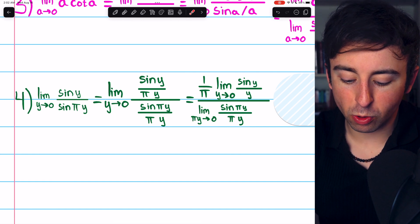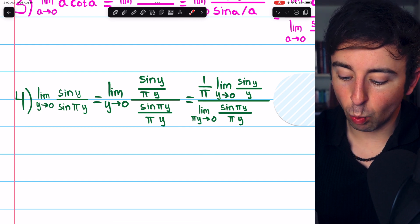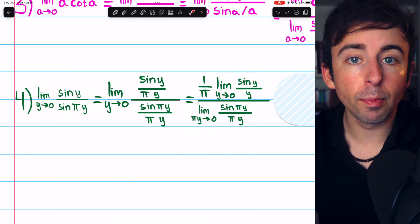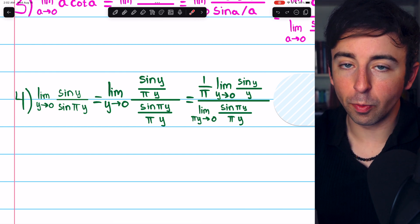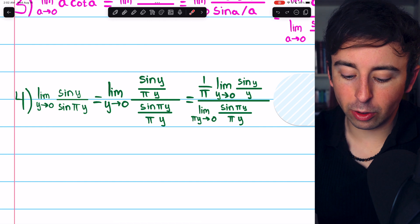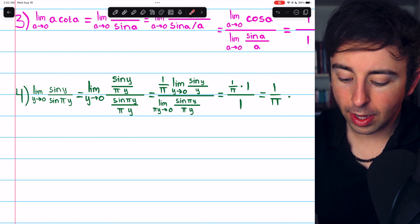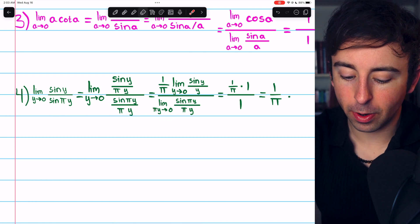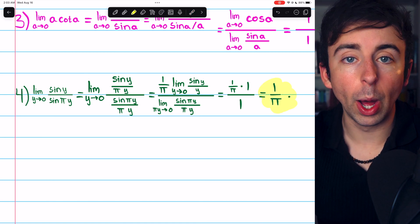With y approaching zero, that's the same as pi y approaching zero. So we have one over pi times the limit as y approaches zero of sine y over y — which is one — divided by the limit as pi y approaches zero of sine pi y over pi y — which is also one. The limit is one over pi times one divided by one, which is one over pi.